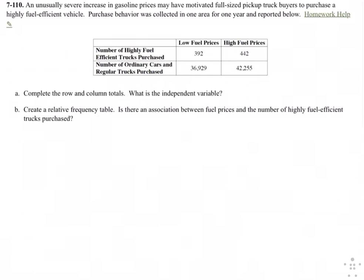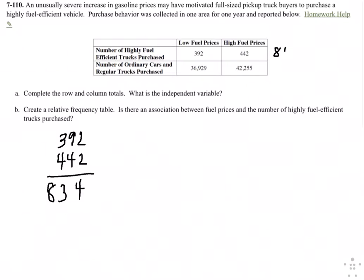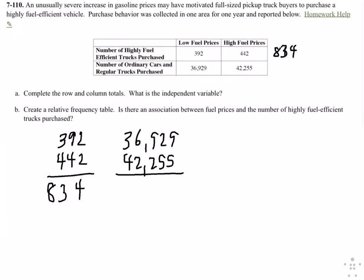First it says compute the row and column totals for A, so this is just addition. If I go across the columns, I get 392, and I'm going to add 442 to that, I get 834. Then next I get 36,929 and 42,255 — that's the second row across — and that gives me 79,184.